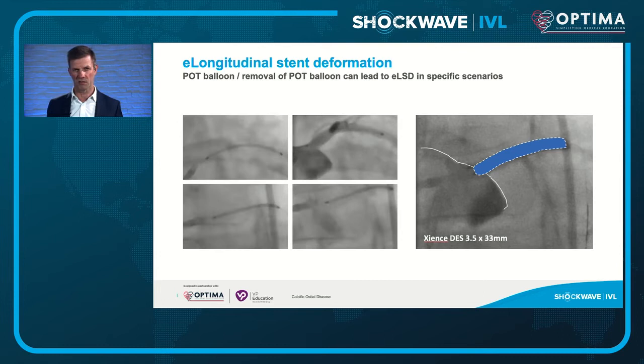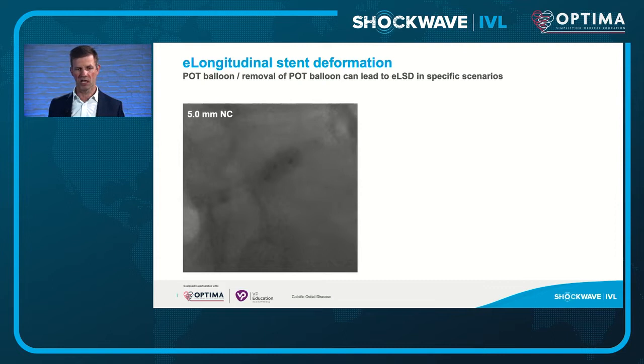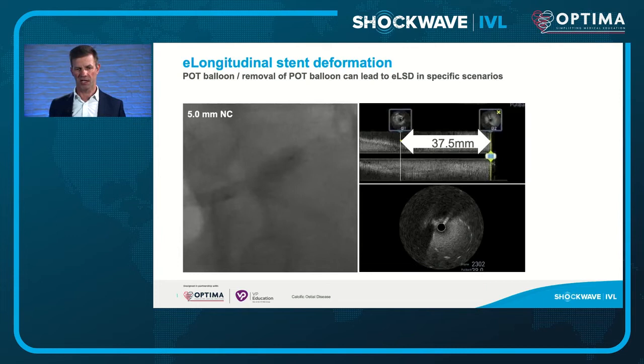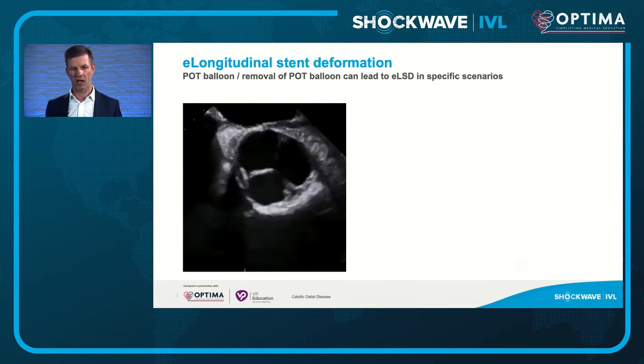After assessing on IVUS imaging, a POT balloon is used — first at the carina, then at the ostium. Measuring the stent length after POT, what was a 33 millimeter stent has elongated to 37.5 millimeters, and the stent now lands outside the aorto-ostium by this four millimeter length — a poor result demonstrating the risk of stent elongation with POT technique.